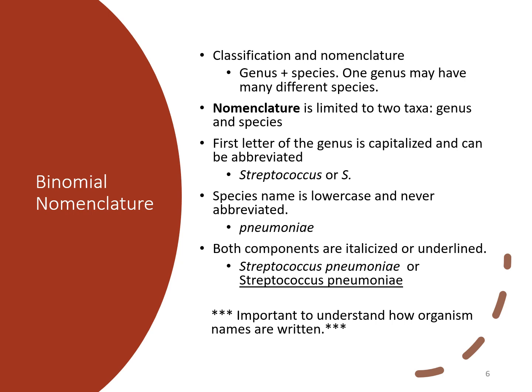For instance, pneumoniae would be spelled out as either S. pneumoniae or Streptococcus pneumoniae. Both the genus and species are italicized when typed. If written by hand, they would be underlined to indicate the genus and species. You will use this throughout your microbiology course, so you need to be very familiar with how you write out an organism's name.